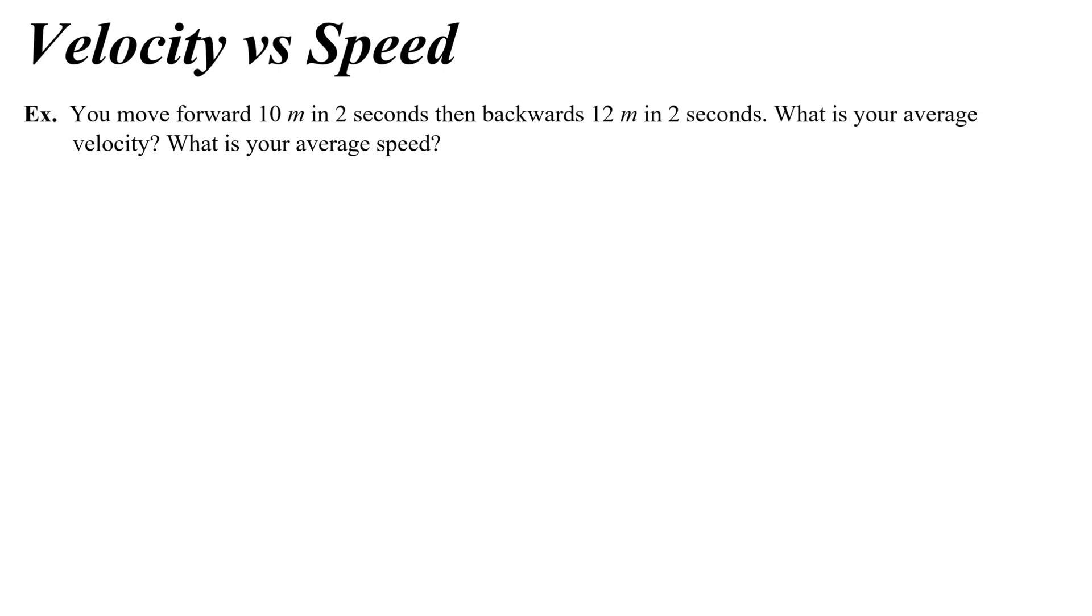Here's an example. You move forward 10 meters in 2 seconds, then backwards 12 meters in 2 seconds. So that's the exact same thing, right? But now we have a time scale. So the change of your position, negative 2. Your distance, 22. But now we have this shared value of time, where it's 2 plus 2, or 4 seconds. You do these movements in a total of 4 seconds.